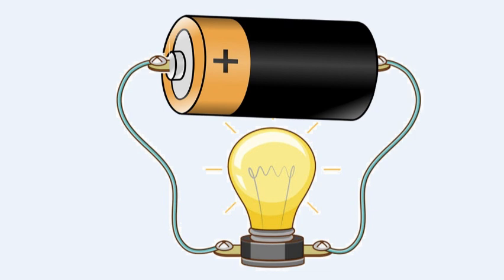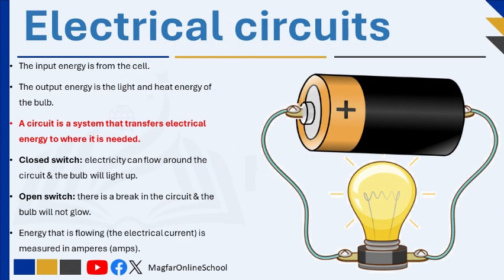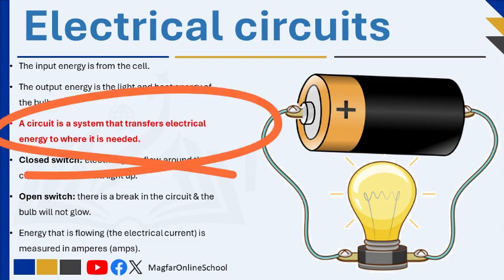The stored energy in the battery is changed into electrical energy. A circuit is made up of different parts including a cell, conduction wires, and a bulb. An electrical circuit is a system. The input energy is from the cell. The electrical charge moves along the wire — we say that the wire conducts, or carries, electricity. The output energy is the light and heat energy of the bulb. By definition, a circuit is a system that transfers electrical energy to where it is needed.